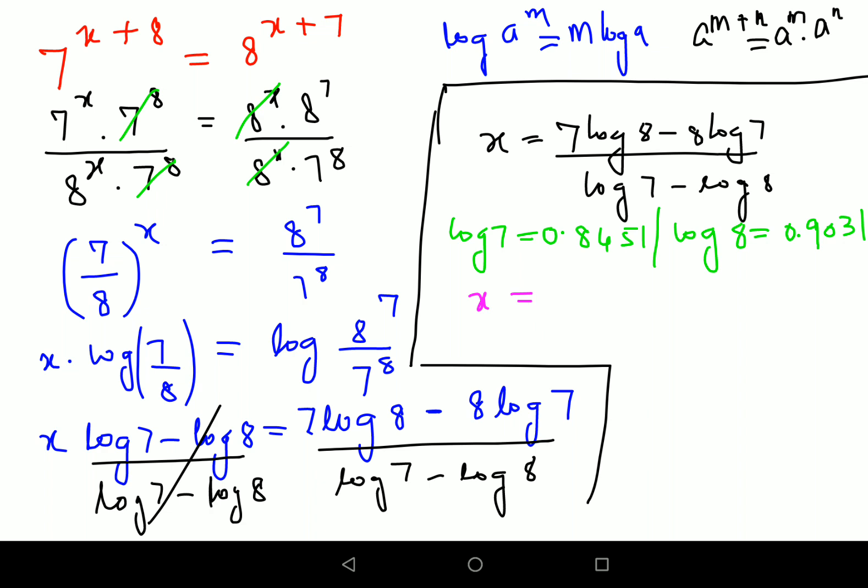So when I put the value of log 8 multiplied by 7, I get an answer as 6.3217. Similarly, 8 into 0.8451 I get the answer as 6.7608. When you subtract these two, you get the answer as minus 0.058.